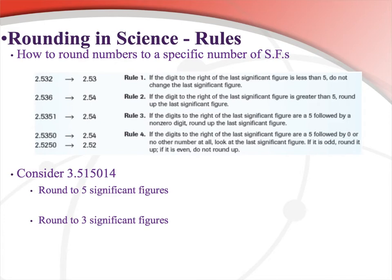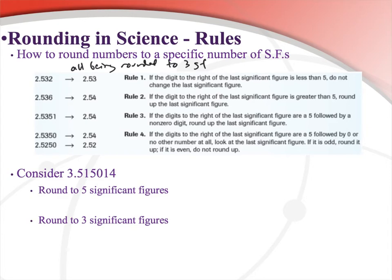Before the calculation rules, let's talk about general rounding rules. In these examples, everything is being rounded to three significant figures. If your calculation gives you 2.532 and you want to round to three significant figures, find the third significant figure — the 2 is first, the 5 is second, the 3 is third. Look at the digit after it: it's a 2, which is less than 5, so rule one says do not change the last value. So 2.532 rounded to three significant figures becomes 2.53.